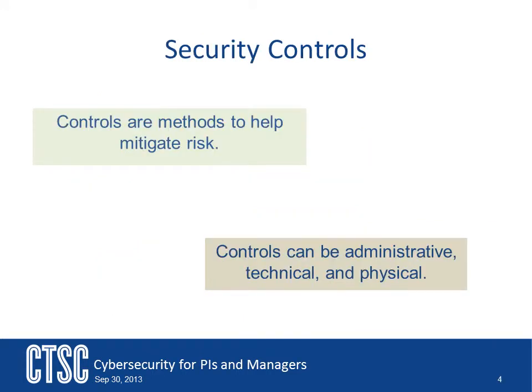Controls can be broken into three categories: administrative, technical, and physical. These correspond to the different ways of dealing with risk. Each has their place, and in most cases you will have to develop controls in each of these areas.